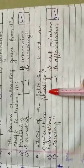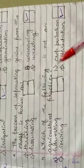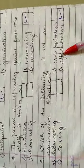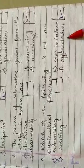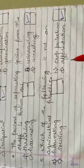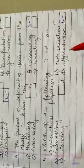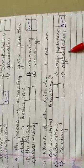Which of the following is not an agriculture practice? Harvesting, sowing, crop protection, or afforestation. Agriculture practice means kheti se judi huyi activities. Harvesting means fasal ko kaatna, sowing means beej bona, crop protection means fasal ko bachana. Afforestation is a process in which we plant trees — hum paudhon ko lagate hain — but that is not an agriculture practice, because it is not necessary that they will give us yield.